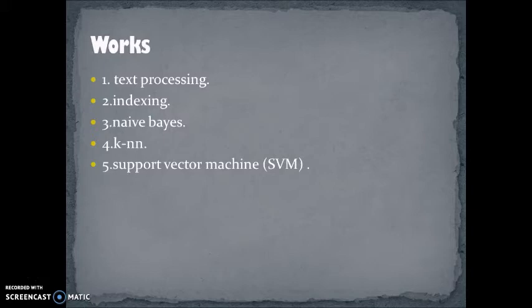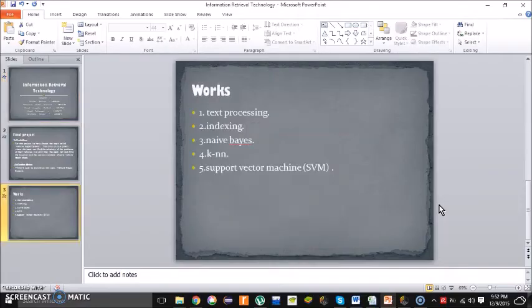For the indexing part, first you have to do the text processing from your documents. You have to find the term occurrences, the document occurrences, the term frequency, and the TF-IDF. After that, you can do the indexing — it's very simple.